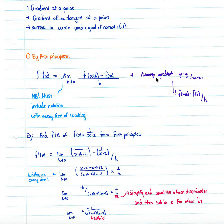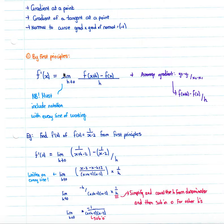This is simply your average gradient, which is y2 minus y1 over x2 minus x1, where f(x+h) minus f(x) over h is your gradient. You must remember when solving by first principles to include the limit as h tends to zero notation with every line of working, as they have become very strict with notation and how you lay out working.